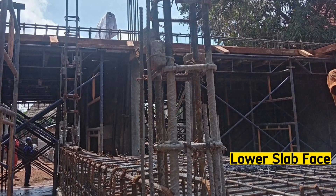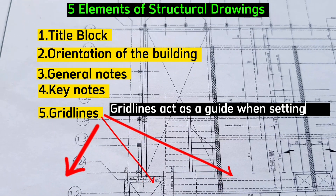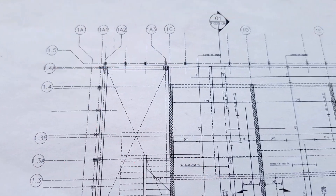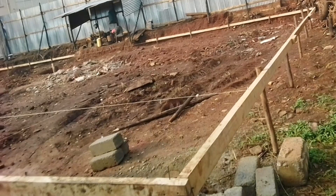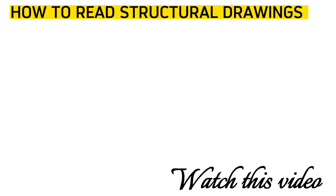The fifth element is understanding grid lines. Grid lines guide you when setting out a building. Watch this separate video about how to clearly understand grid lines in a structural drawing and how to set out a building.